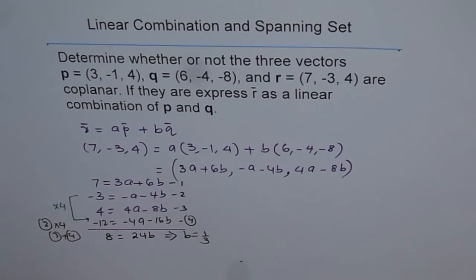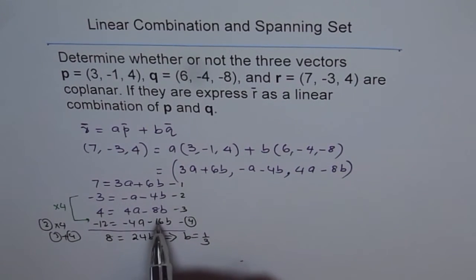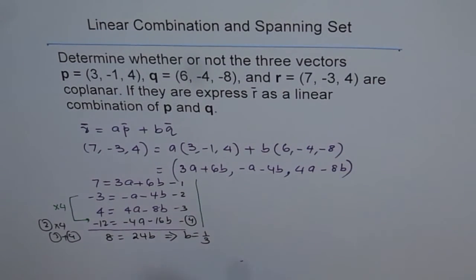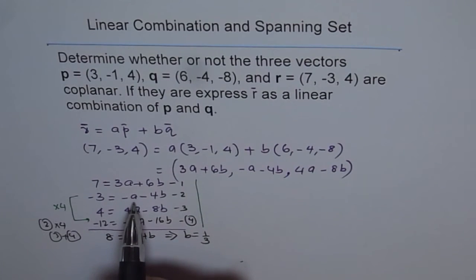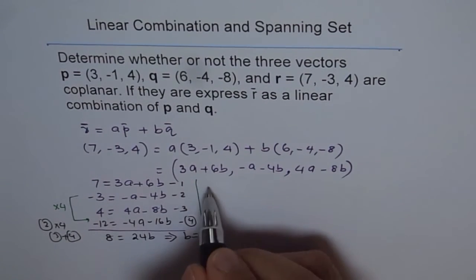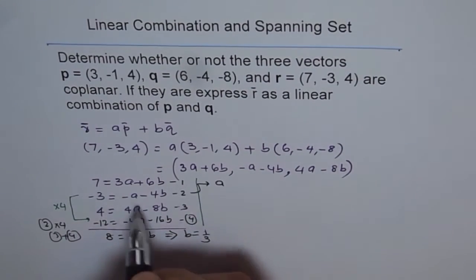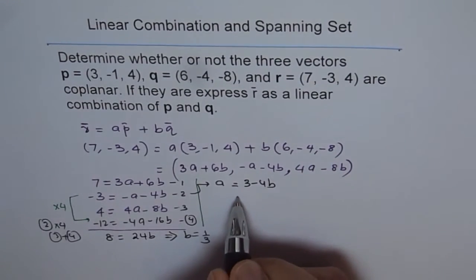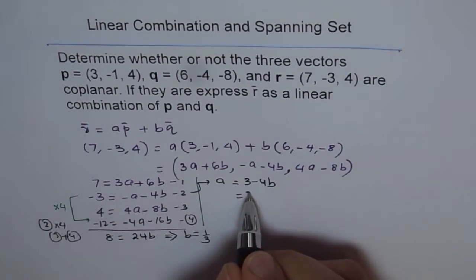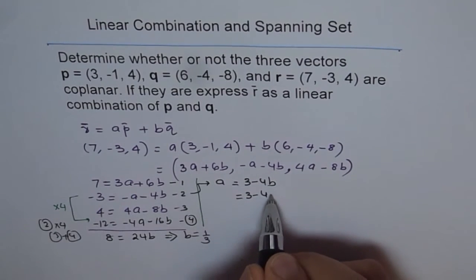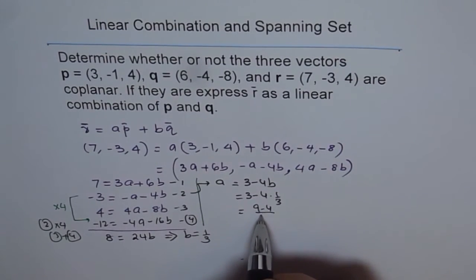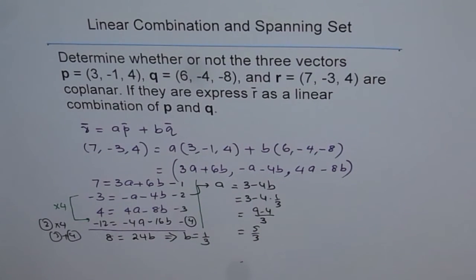That is the value of B. Now we substitute B = 1/3 into equation 2 to find A. From equation 2, isolating A gives A = 3 - 4B. With B = 1/3, we get A = 3 - 4/3 = 9/3 - 4/3 = 5/3. So A = 5/3.